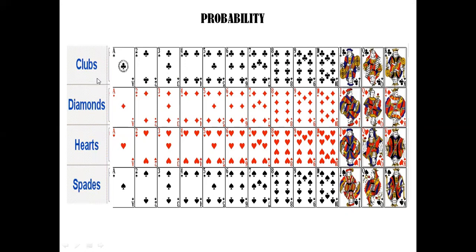For club we have 13, diamond 13, heart 13, spade 13 — so 13 times 4 is 52 cards in all. Jack, queen, and king are known as face cards. And ace is known as ace. You should remember these things.